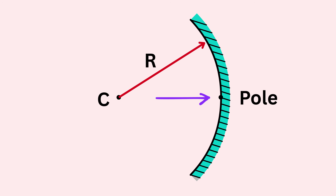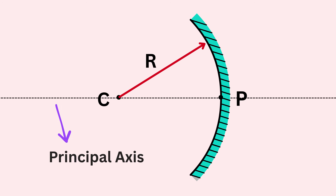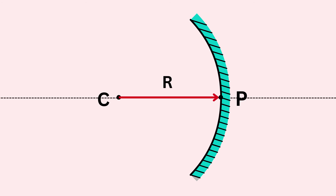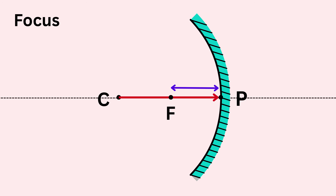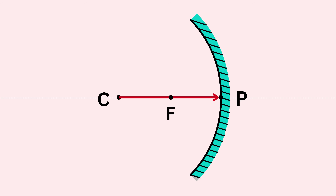Let's learn some important terms for a concave mirror. The center of the mirror is called the pole, marked as point P. The center of the imaginary sphere from which the mirror is cut is the center of curvature, marked C. The straight line passing through P and C is the principal axis. The distance between P and C is the radius of curvature, R. Exactly halfway between P and C lies the focus, marked F, and the distance from P to F is the focal length, which equals R divided by two.